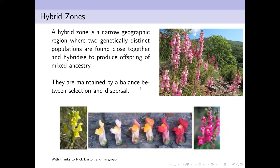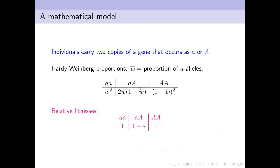Hybrid zones can also be maintained by sharp changes in the environment, such as soil type. A soil boundary won't move much, whereas if it's a genetic effect—populations pushed together with unfit hybrids—those hybrid zones might move around. We're motivated by understanding how hybrid zones move, so we'll build a very simple mathematical model.